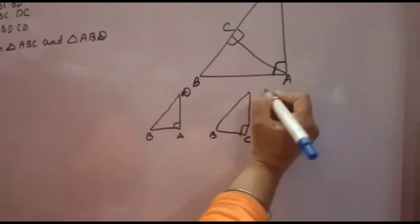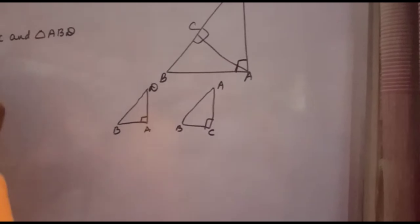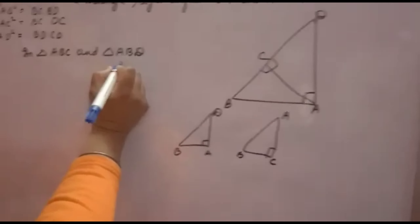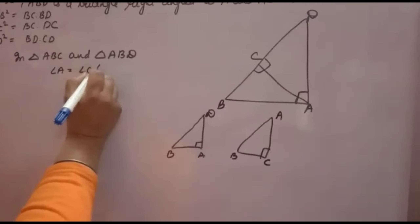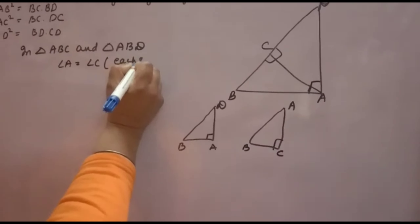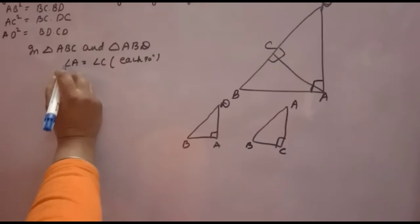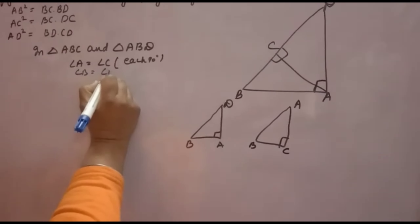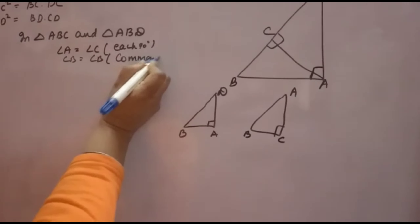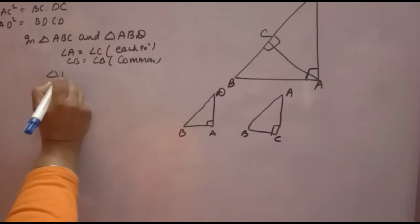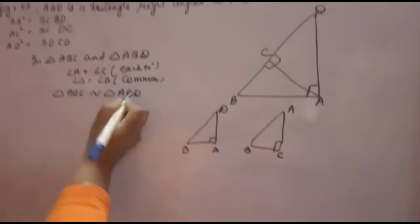So you will take B here, and what is left — A you will take here. In triangle ABC and triangle ABD, you write: angle A is equal to angle C because both are 90°, angle B is common. Therefore triangle ABC is similar to triangle ABD.